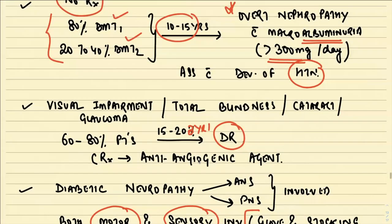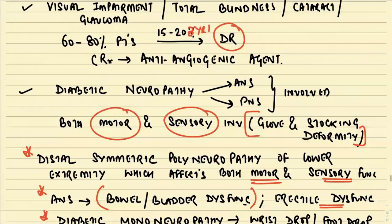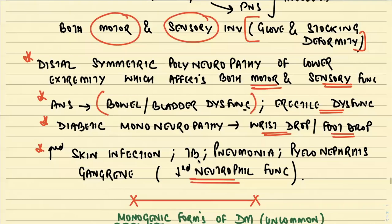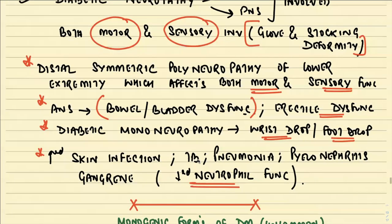A student asks why there is decreased neutrophil function in diabetics. The answer is that it is probably triggered by hyperglycemia or deposition of certain products at that site.